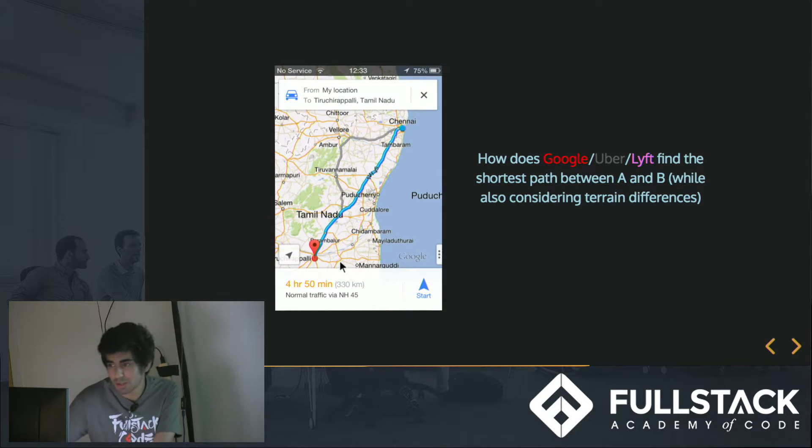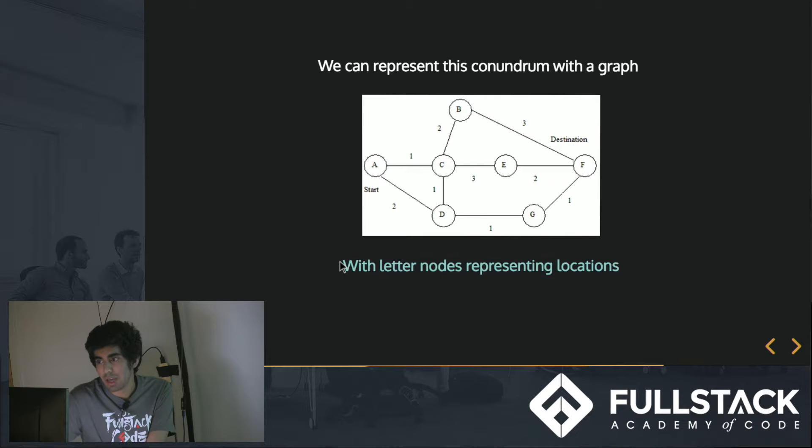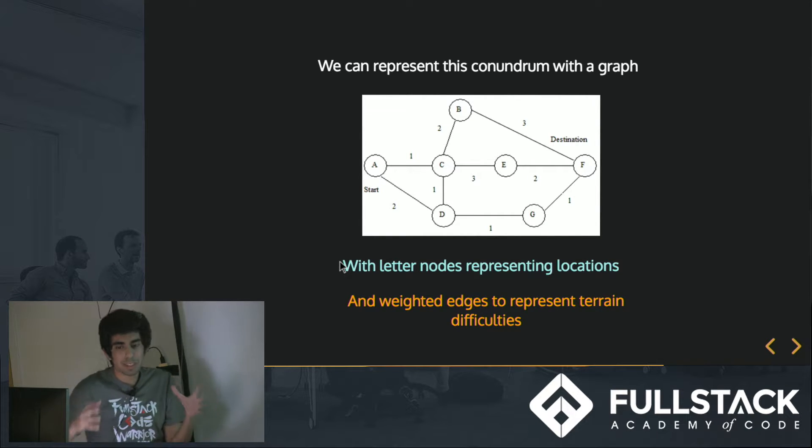So one sort that's used is we can first take the entire Google Maps app and put it in a graph where we represent one node, A, as a starting location, and another node, F, as an ending location. And each of these edges represents the pathway from the start to the destination.